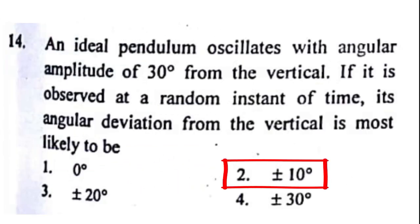Problem number 14: An ideal pendulum oscillates with angular amplitude of 30 degrees from the vertical. If it is observed at a random instant of time, its angular deviation from the vertical is most likely to be? The correct answer to this problem is option 2, that is plus minus 10 degrees.